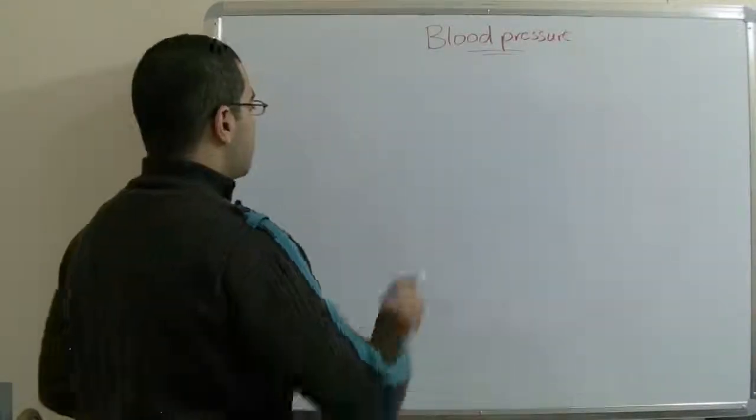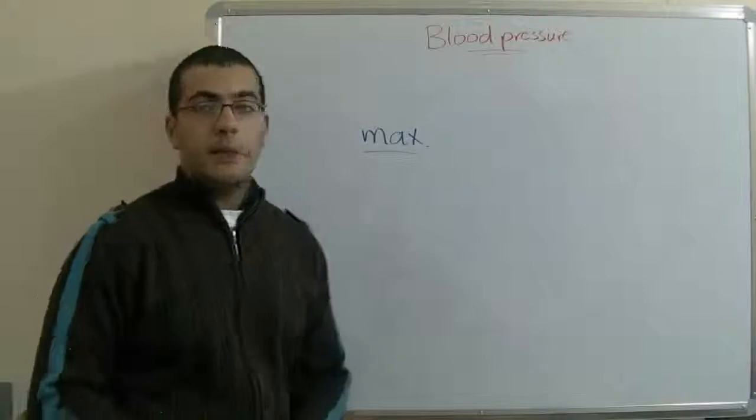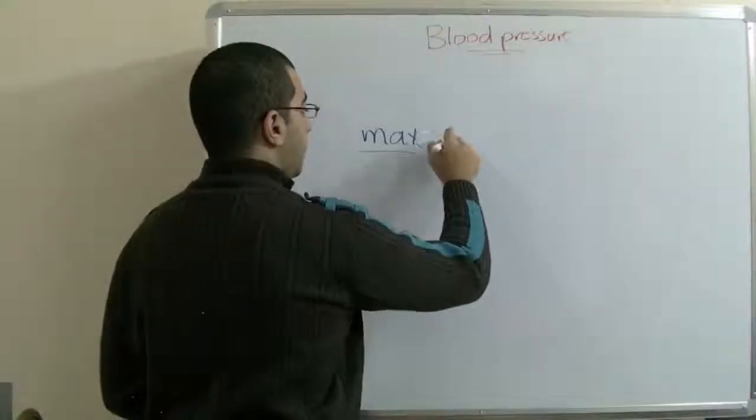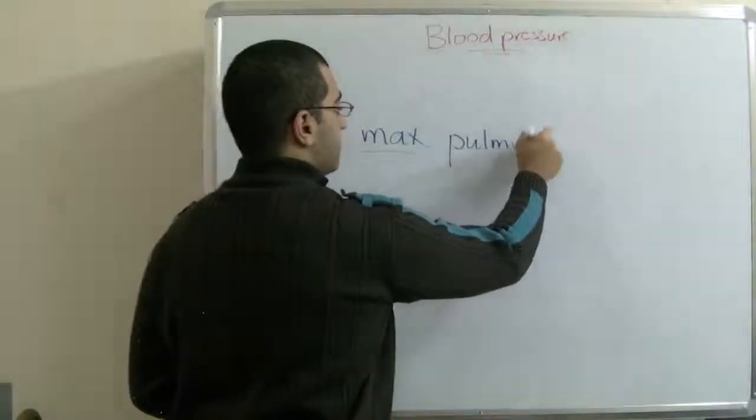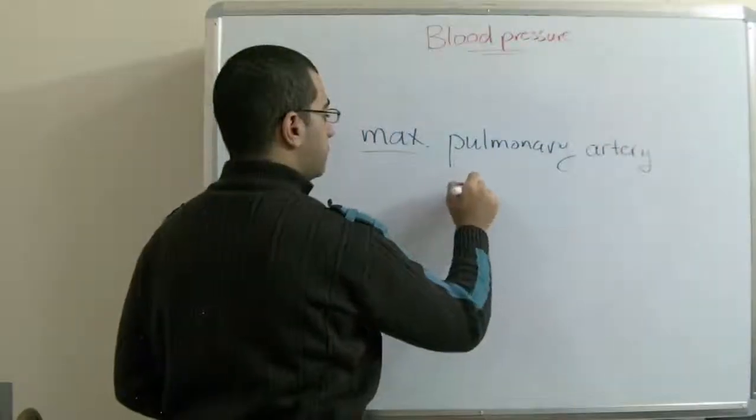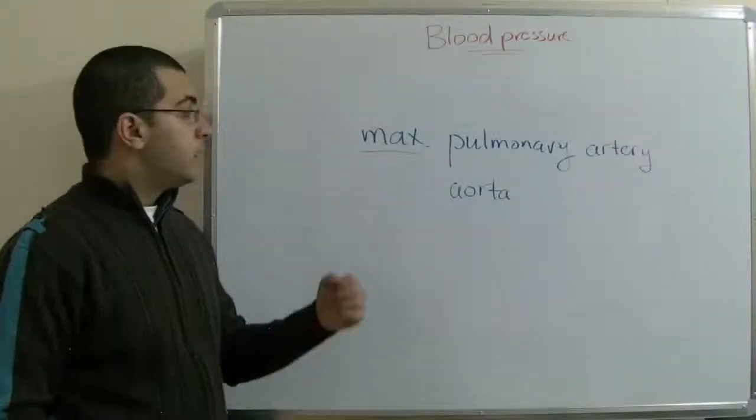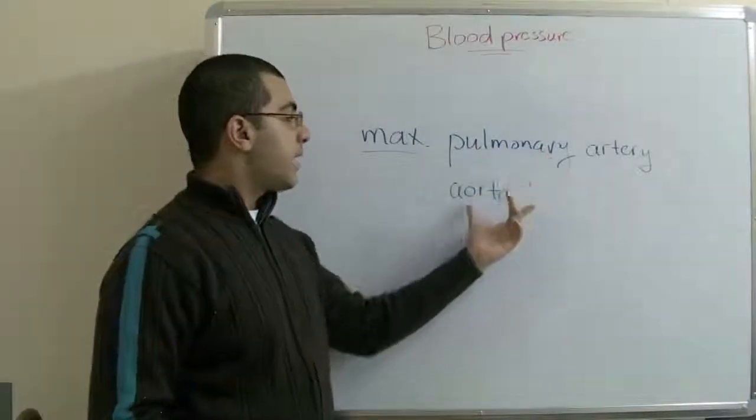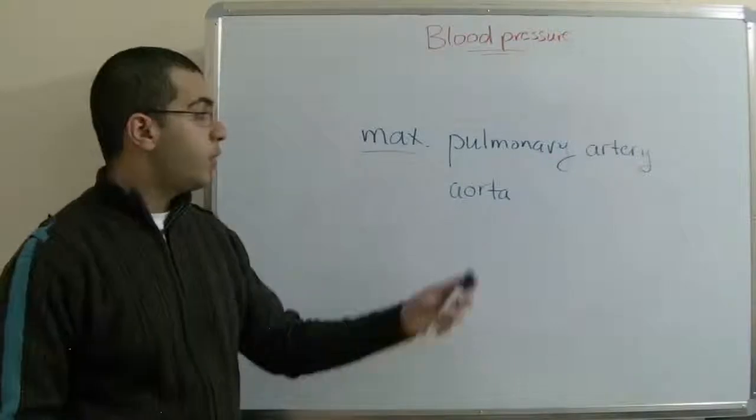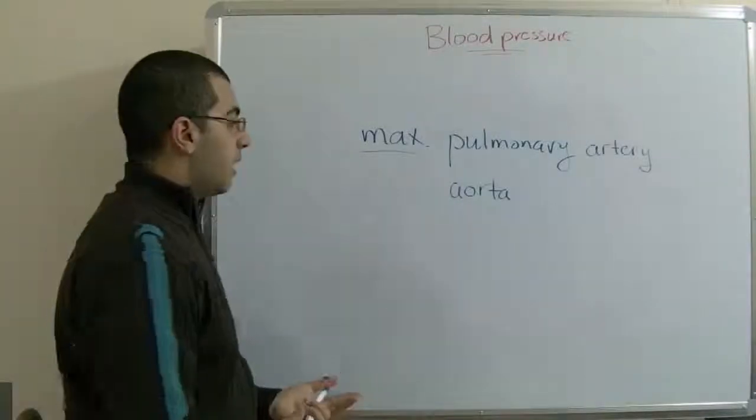The maximum blood pressure can be measured in the pulmonary artery and the aorta. Because when the heart pumps the blood, the blood moves through these arteries which transfer the blood from the heart to the other body organs. So at the point of contact with the pulmonary artery and the aorta, the maximum blood pressure can be measured.